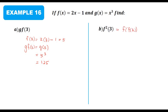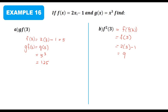Now let's look at f²(3). f²(3) is the same as f composite f of 3. Since f(3) = 5, we find f(5): substitute 5 into f(x) to get 2(5) − 1 = 9.